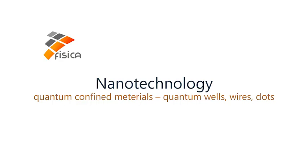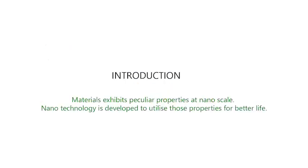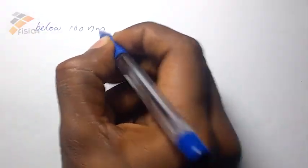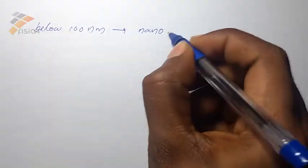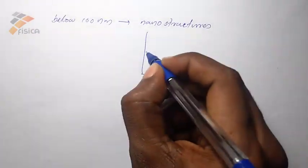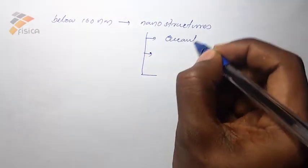Nanoscale materials exhibit extremely different properties, and nanotechnology is devised to utilize the particular properties of materials at such nanoscale. The materials having dimensions below 100 nanometers are called nanostructures, and these nanostructures are quantum wells, quantum wires, and quantum dots.